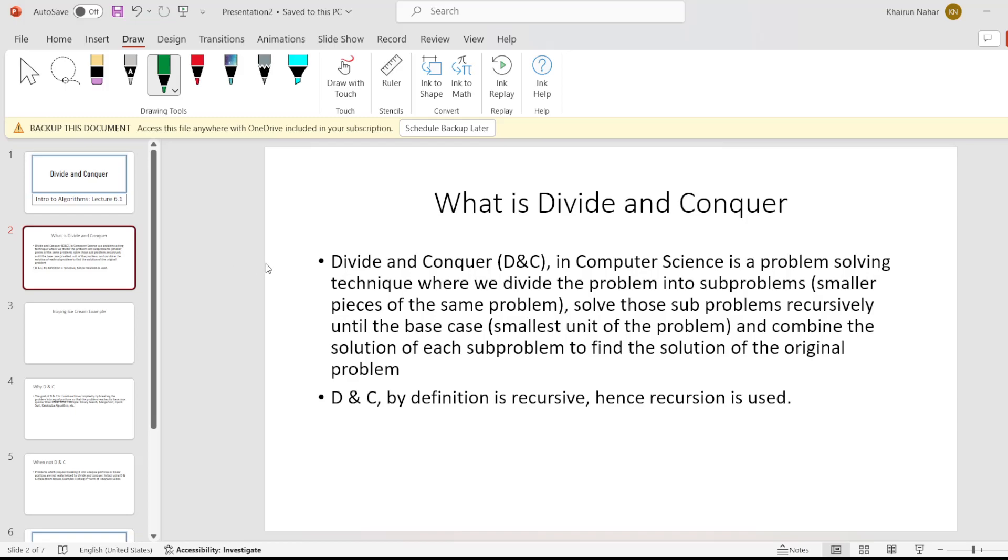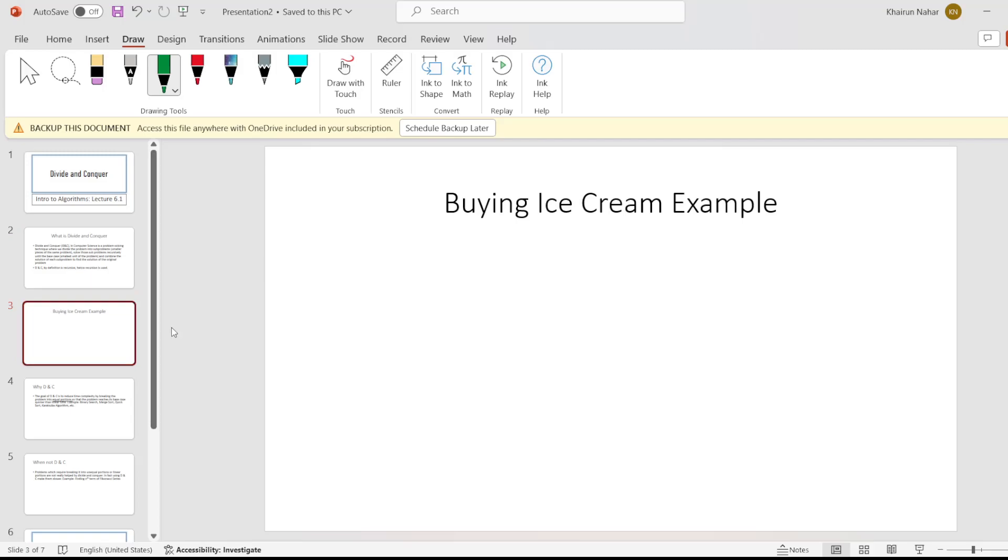So let's see what is meant by this definition. Let's take an example: buying ice cream. Buy four ice creams. So this is the work, and the problem size is 4. So n equals 4.